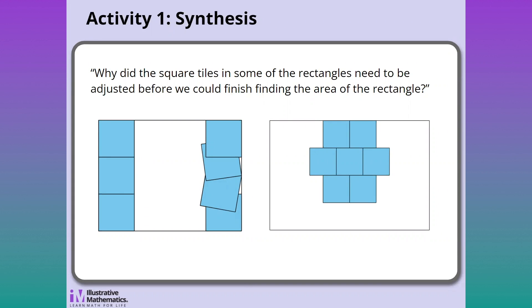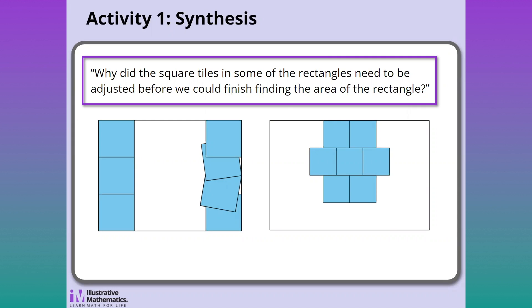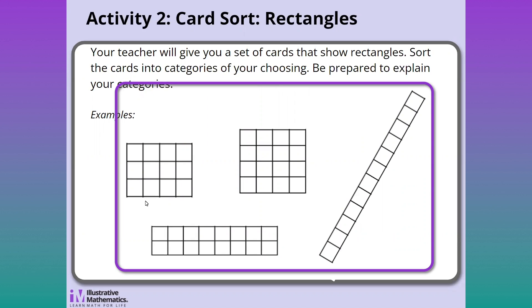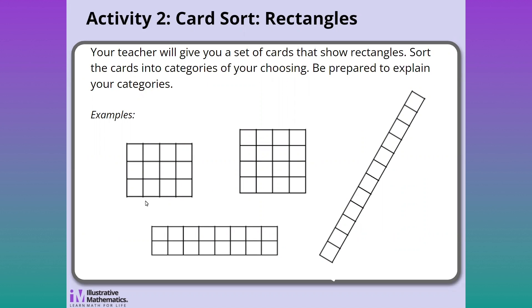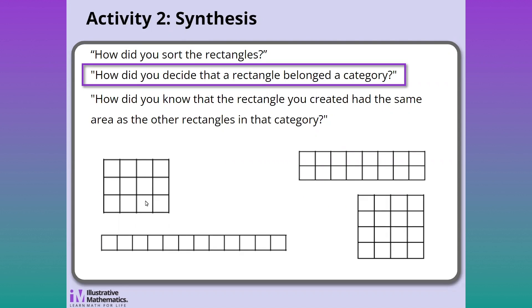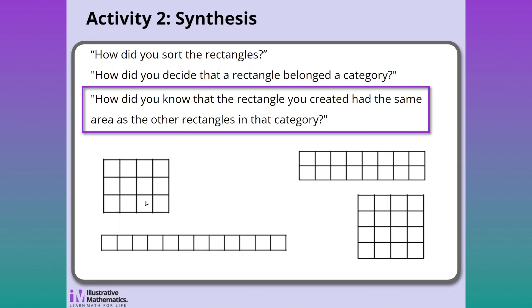The synthesis of this first activity asks students to consider why some square tiles needed to be adjusted in order to find the area of the rectangle. In the next activity, students do a card sort launched with a notice and wonder because the activity is more abstract. Students are given a set of rectangles and asked to sort them in any way that makes sense, explain their sorting, and create a new rectangle that could fit into each of the categories they created.